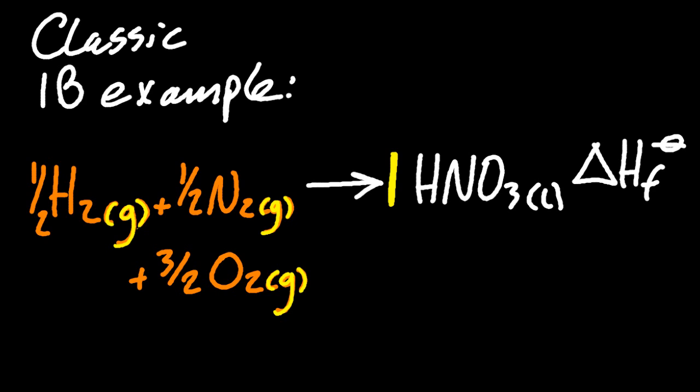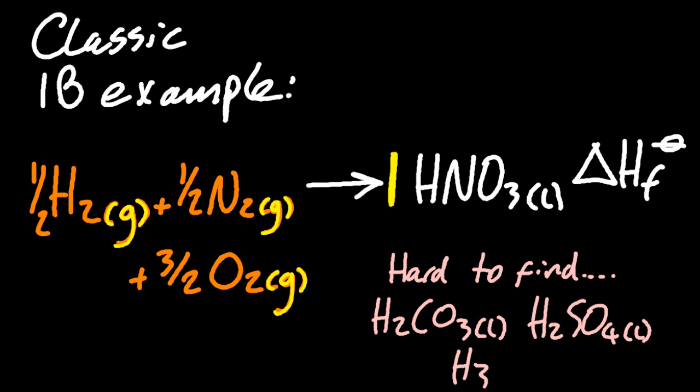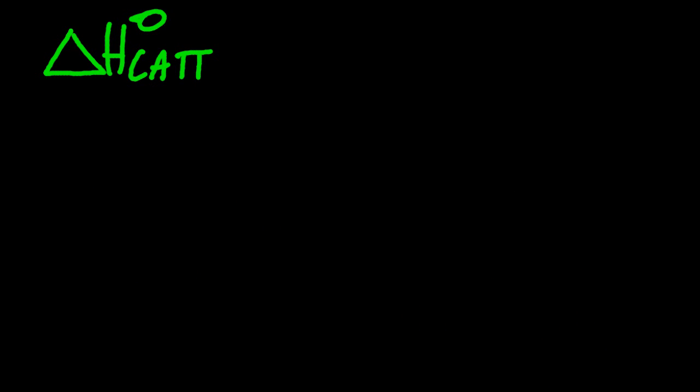So why is it always nitric acid? What's the problem with, for example, these ones? Carbonic acid or sulfuric acid or phosphoric acid. Well, the problem is the C, the S and the P, they have different allotropes. And you're not supposed to know, or it's not part of the syllabus, to know what their standard form is.